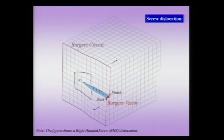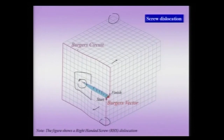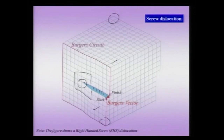If you look at a region far away from this dislocation line it is perfect; if you look at another region above it is also perfect, but the region close to where the cut ends has high disturbance. I can now make a Burgers circuit in this structure — making the same circuit in the perfect crystal and reproducing it in the defected crystal — and using the right-hand finish-to-start rule I can determine the Burgers vector.